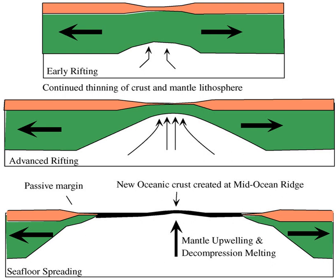Extensive estuaries are common on mature passive margins. Although there are many kinds of passive margins, the morphologies of most passive margins are remarkably similar. Typically they consist of a continental shelf, continental slope, continental rise, and abyssal plain. The morphological expression of these features is largely defined by the underlying transitional crust and the sedimentation above it. Passive margins defined by a large fluvial sediment budget and those dominated by coral and other biogenous processes generally have a similar morphology.